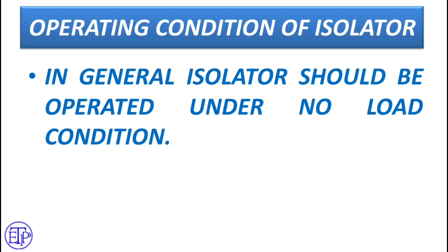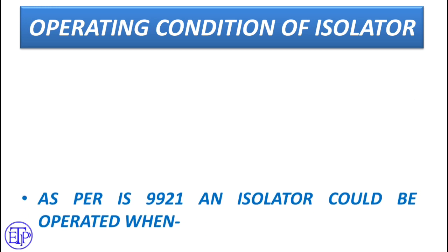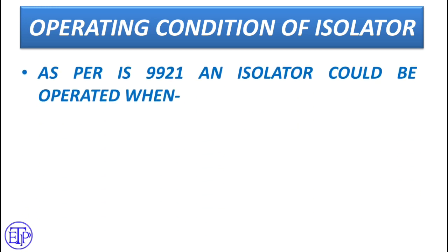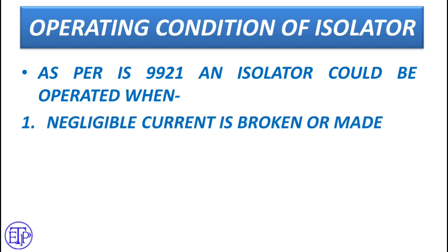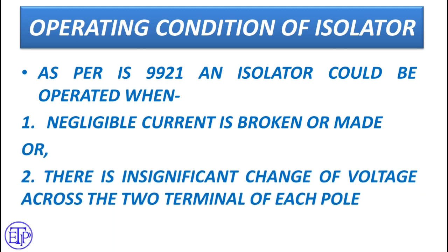First we will see what is the basic operating condition of the isolator. In general, an isolator should be operated under no-load condition. This is the theory — as per theory, an isolator should only be operated under no-load condition. But there is a big question mark. As per IS9921, an isolator could be operated when negligible current is broken or made, or there is an insignificant change of voltage across the two terminals of each pole. Watch these two points very carefully — they basically support the philosophy of no-load operation.